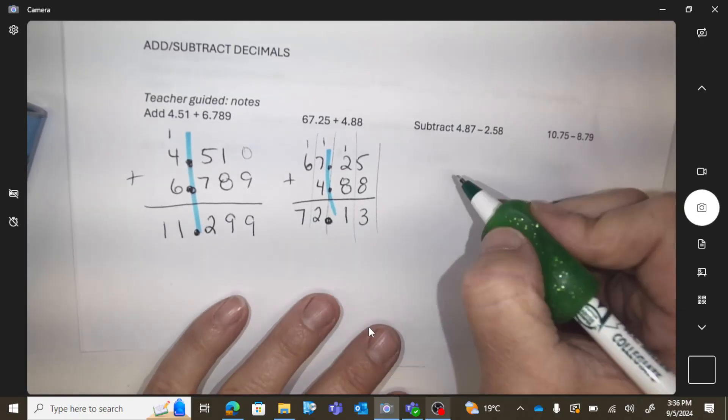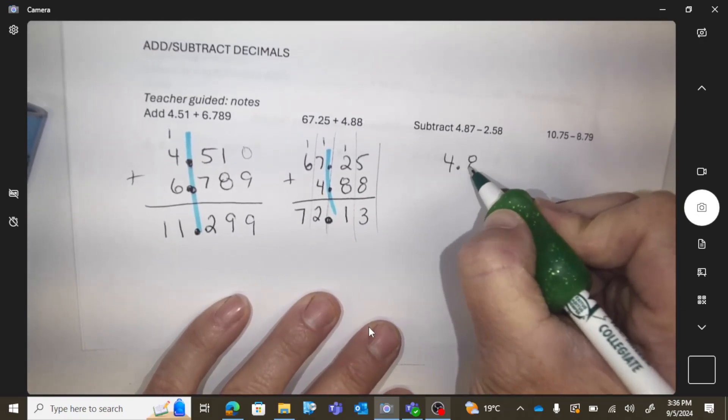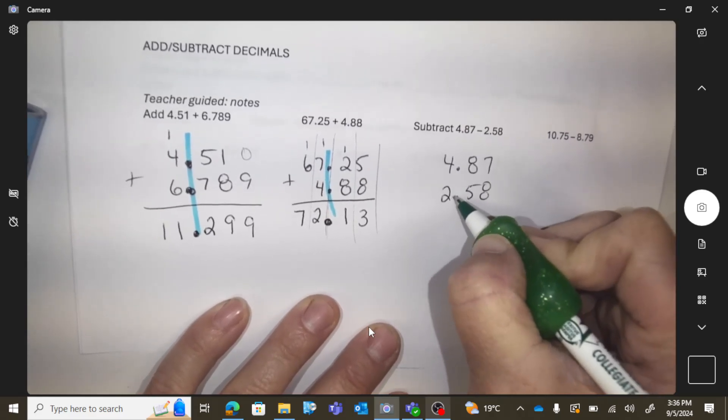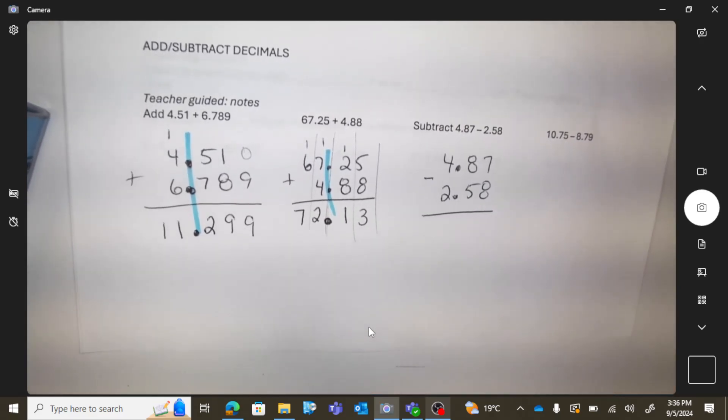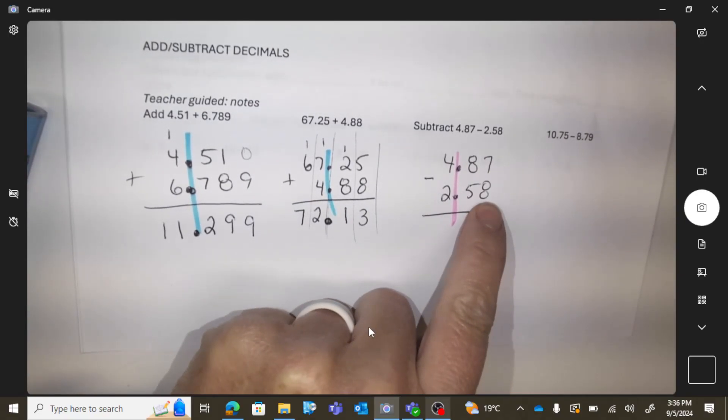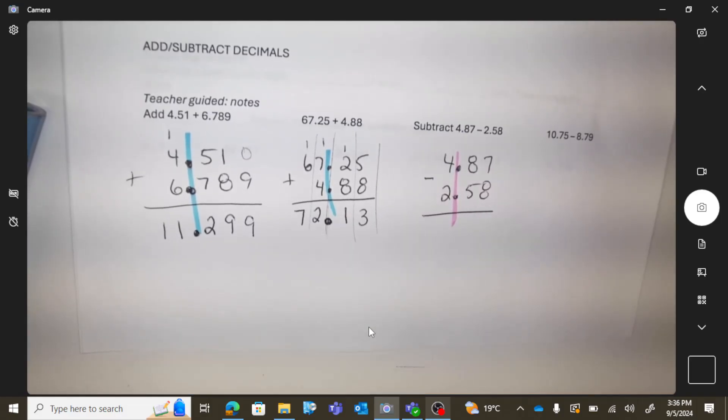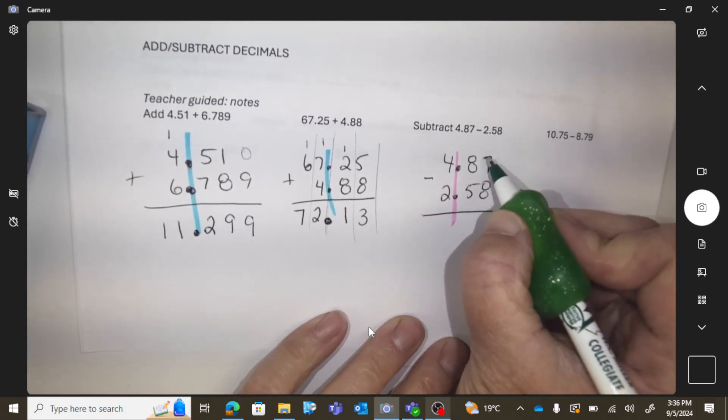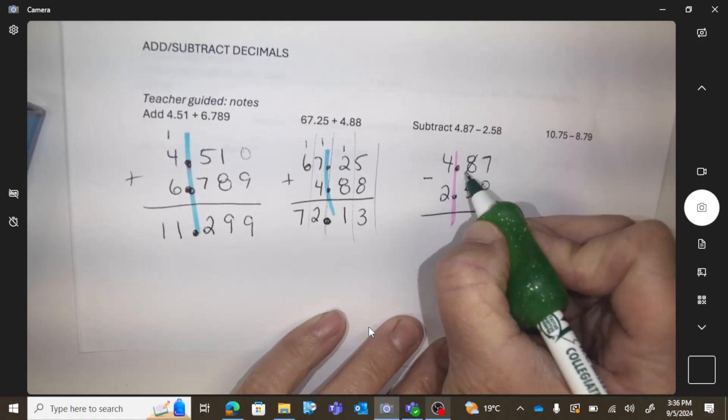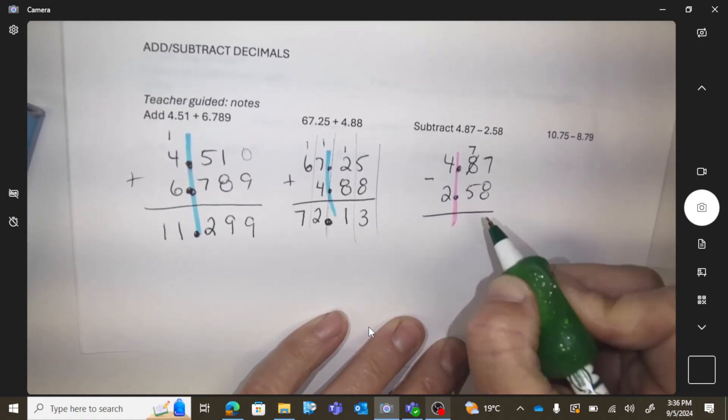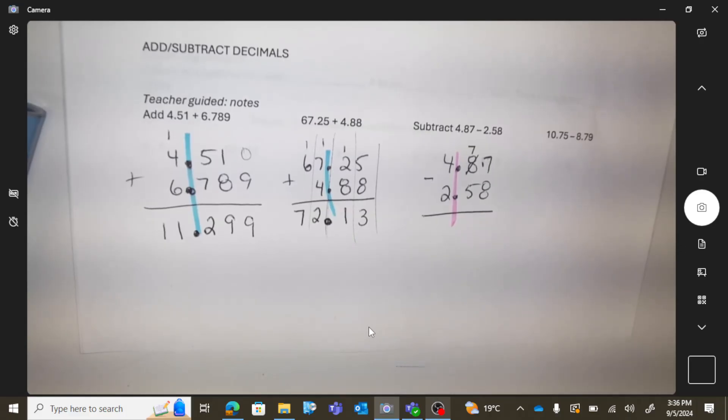Subtracting 4.87 minus 2.58, again focusing on lining up the decimal. With subtraction, there are times where you can't subtract. For instance, I can't take eight away from seven, so I'm going to go to the neighbor—the eight—change it to a seven, and borrow ten from that position, because every time you move a place in math it's like a ten.